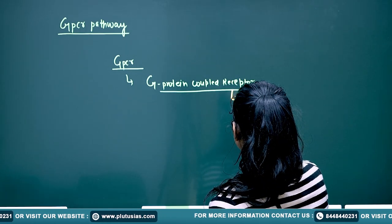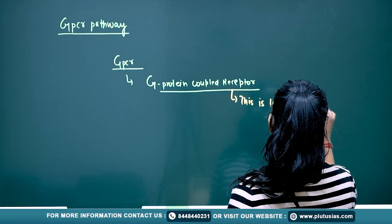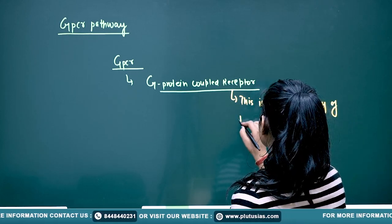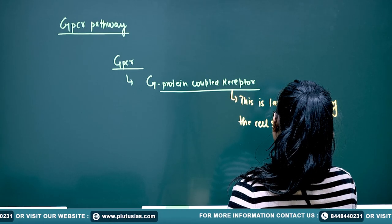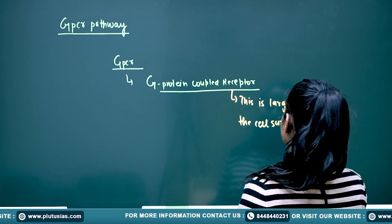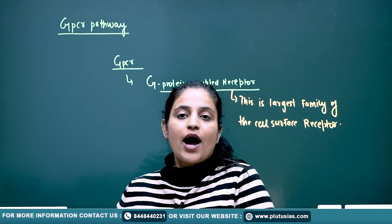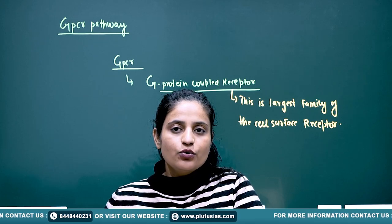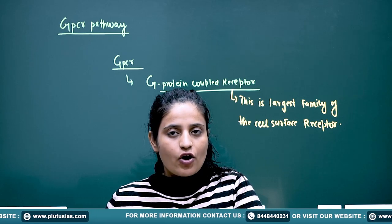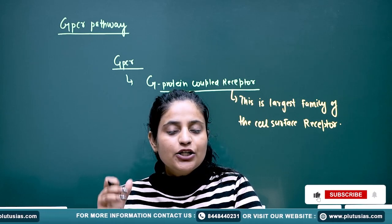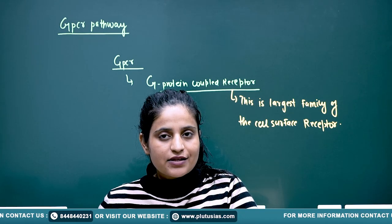This is the largest family of the cell surface receptor. Now, which molecules will bind with it? Those which are hydrophilic in nature — meaning they love water. But because they are hydrophilic, they are unable to pass through the plasma membrane. That's why they first have to interact with the cell surface receptor.